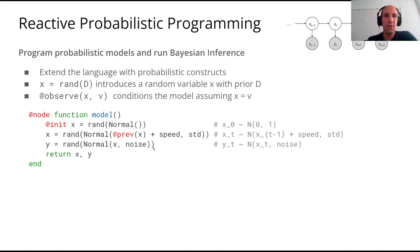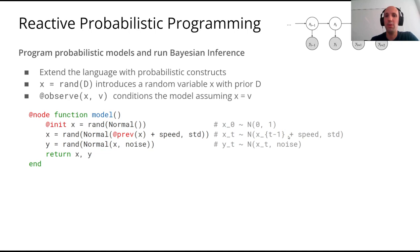Here is a simple example of reactive probabilistic programming with Online Sampling. We use RAND to define a random model: we initialize with the macro init the hidden state X0 as a Gaussian random variable with mean 0 and variance 1. Then X(t) is a random variable where the mean is X(t-1) plus some speed — speed is a positive number meaning the plane moves right — with some standard deviation on the speed.